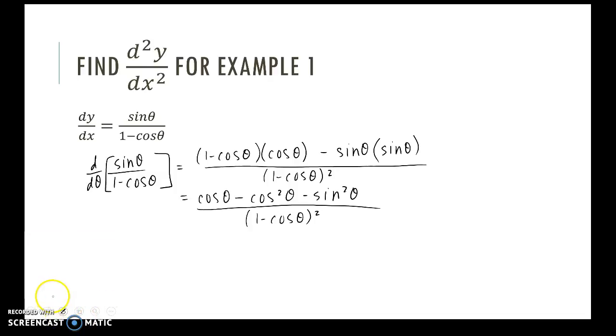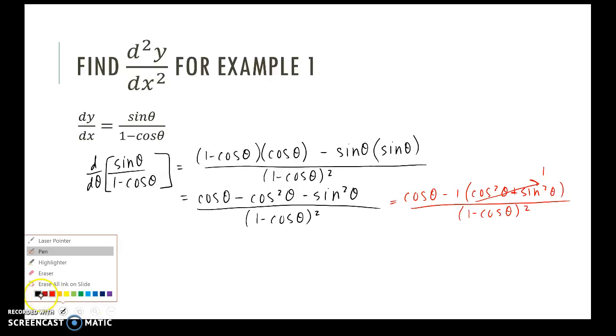Okay, now I see squared trig function. So I should be thinking the Pythagorean identity. So for here, if I factor out a negative 1, I'll be left with cosine squared theta plus sine squared theta. All divided by my denominator. This goes to 1.